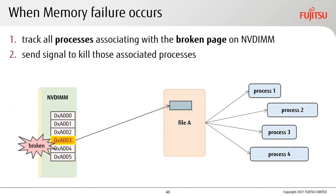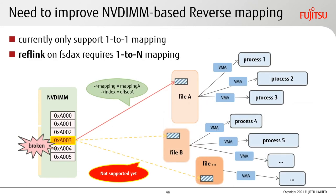As a memory device, memory pages may fail at the hardware level, meaning the page can no longer be accessed. The kernel triggers memory failure handling for this. When memory failure occurs, the system tracks all processes associated with the broken page and sends a signal to kill them. The track from a memory page to a file is called reverse mapping — in this context, NVDIMM-based reverse mapping. The current NVDIMM-based reverse mapping only supports one-page-to-one-file mapping, but with Reflink, files share the same page, so we need to improve it to support one-page-to-many-files mapping.